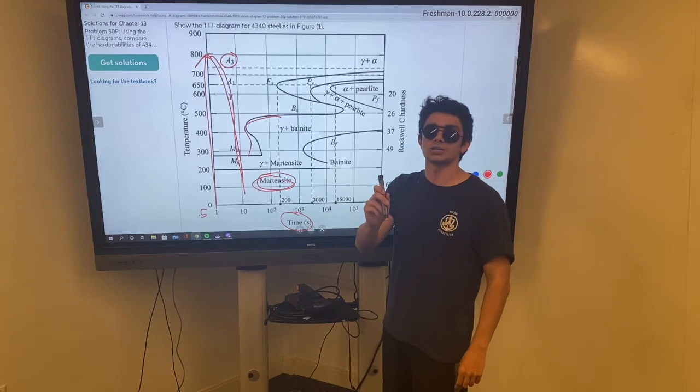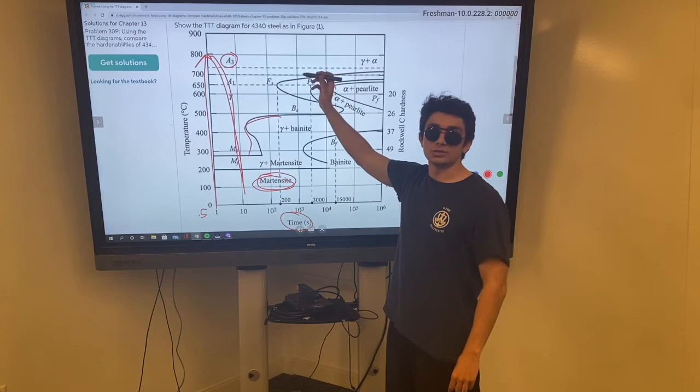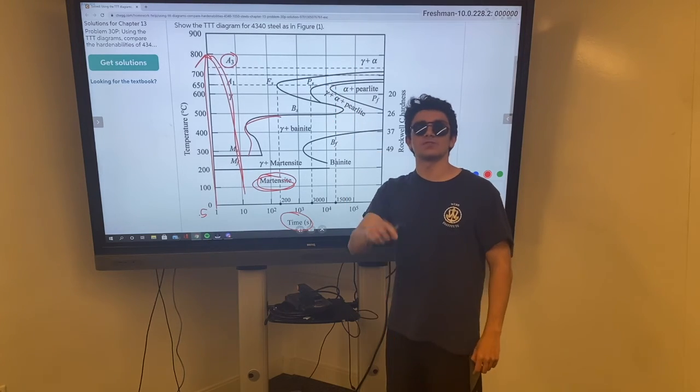You call this hardenability. And these alloys are more hardenable, which makes for brittle welds.